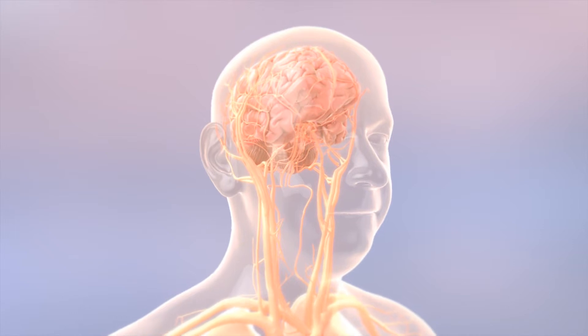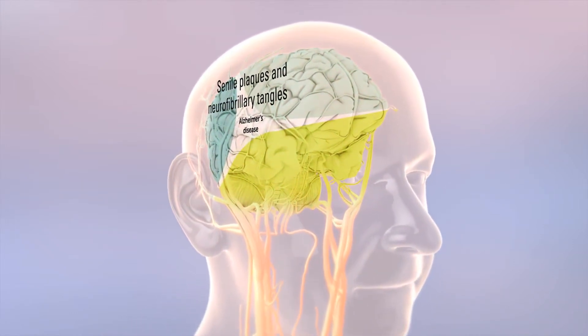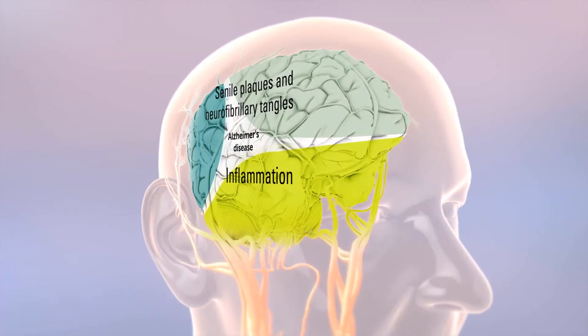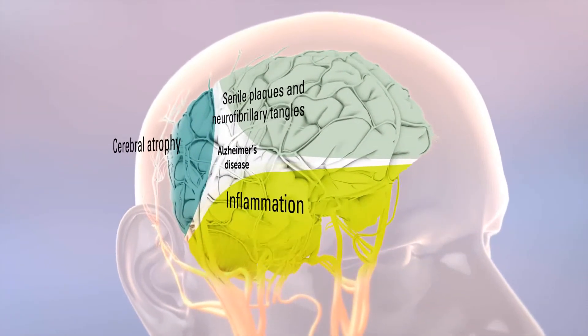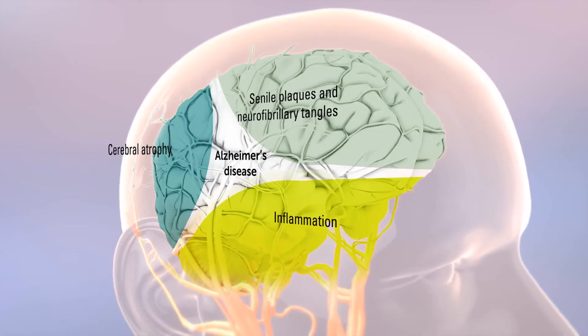Alzheimer's disease changes the brain in at least three ways. Senile plaques and neurofibrillary tangles, inflammation and cerebral atrophy are characteristic pathological changes and are not directly addressed by current therapies.